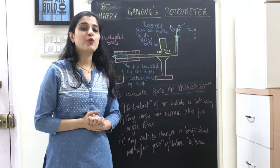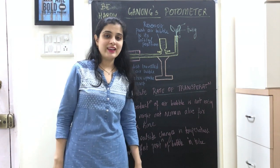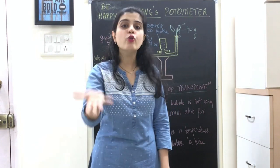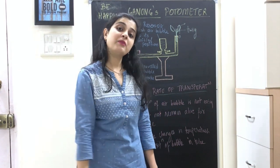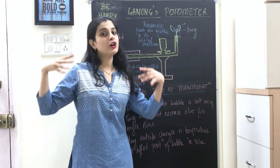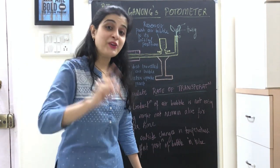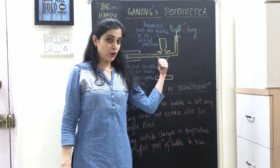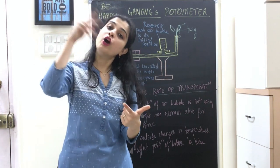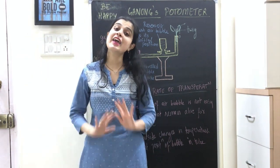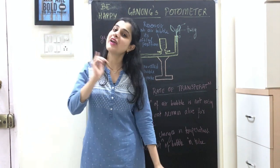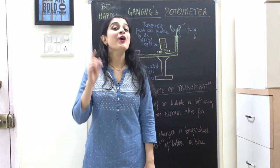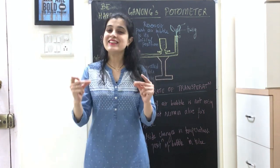This is a five-mark board question. To summarize what we did in this lecture: we defined transpiration, we did two experiments to prove transpiration, and we have four experiments to calculate the amount of transpiration. In this video, you have covered four board questions: Ganon's Potometer, the test tube experiment, and the transpiration proof experiments. For any doubts, post in the comment section below, and if you find this video useful, don't forget to subscribe.